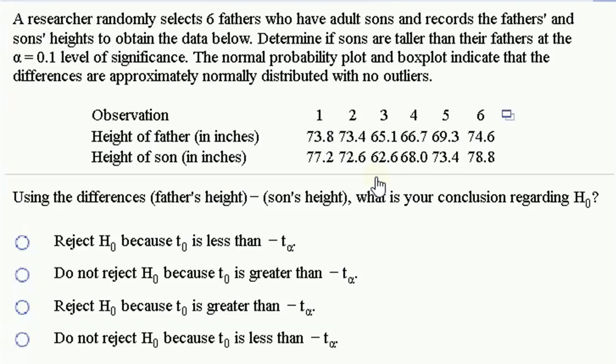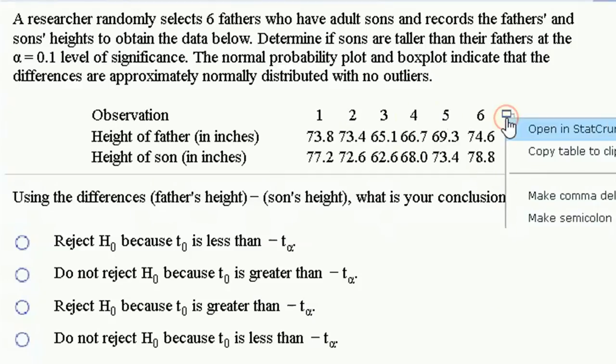We have some data now. A researcher randomly selects six fathers who have adult sons and records the father's and son's height to obtain the data below. Determine if the sons are taller than their fathers at an alpha 0.1 level of significance. We're assuming normality assumptions are satisfied. So let's just open this data in StatCrunch.